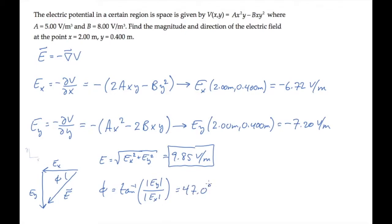And finally, we can find the angle theta measured from the positive x axis by seeing that theta is 180 degrees plus phi, and that works out to 227 degrees.